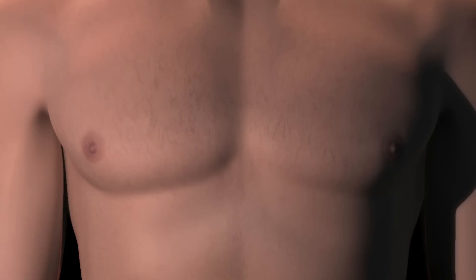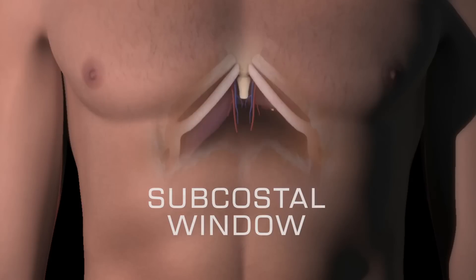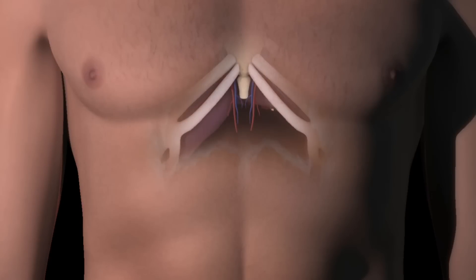The subcostal window is found in the region just below the xiphoid process. The subcostal view can be a viable alternative when image acquisition is difficult from the parasternal or apical windows due to body habitus. This view is also useful for a quick assessment for pericardial effusion.